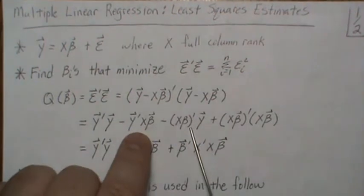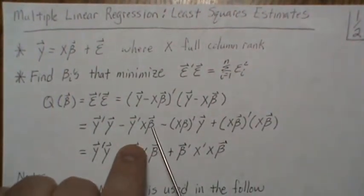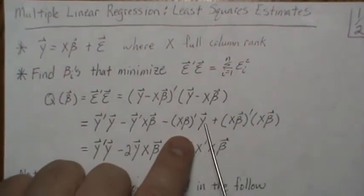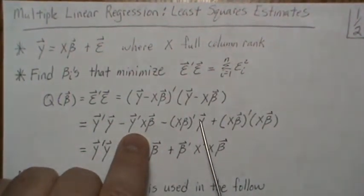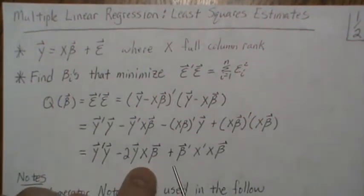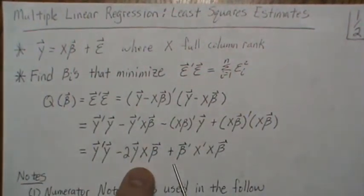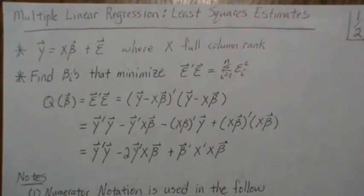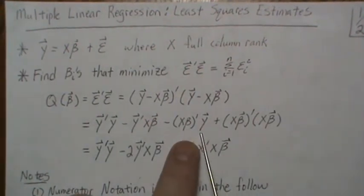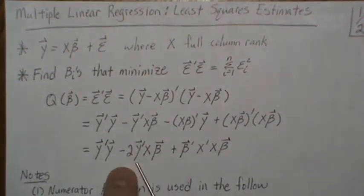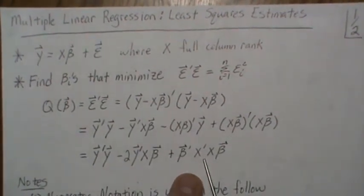Now these are scalars. This is a 1 by N and this is a k plus 1 by 1, so this thing is 1 by 1. We can take the transpose of it and it doesn't change the value. So if we take the transpose of this, it actually puts it in this form — the Y gets a transpose, it moves to the other side, and this becomes untransposed. Then we have two of them, and distributing the transpose gives us this.